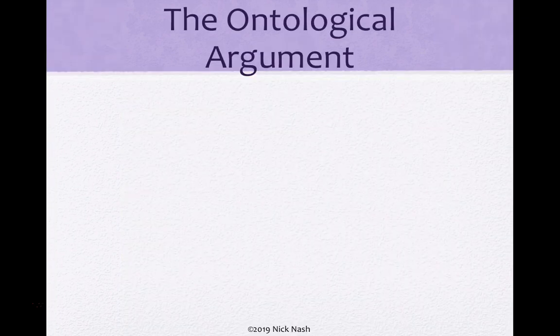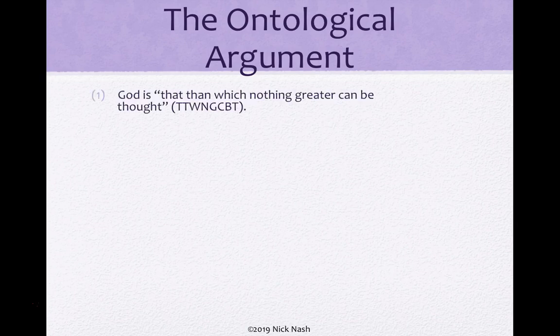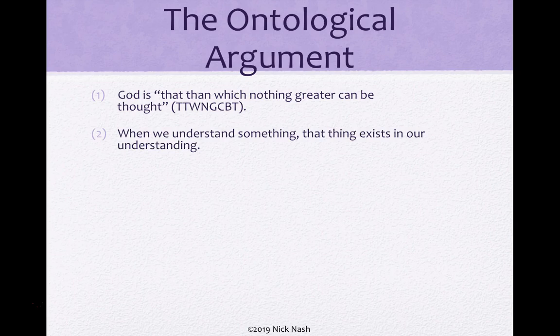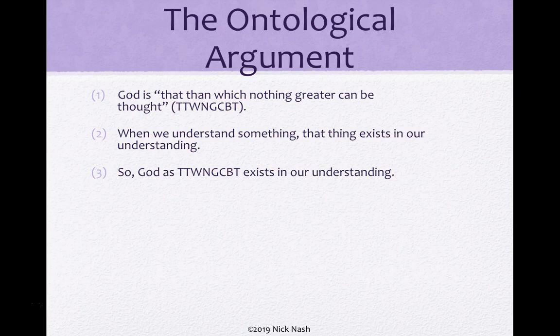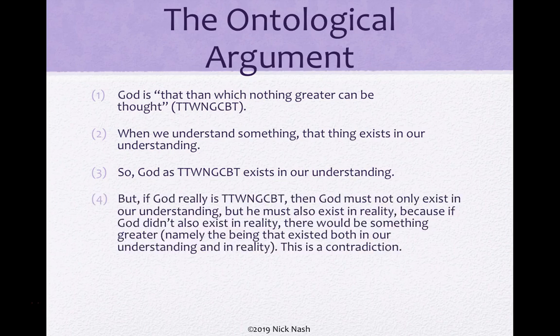I'm going to begin by looking at the ontological argument as it comes out of St. Anselm. The first premise is: God is that than which nothing greater can be thought — I use that acronym there to represent that. The second premise: when we understand something, that thing exists in our understanding. The third premise: God, as that than which nothing greater can be thought, exists in our understanding.